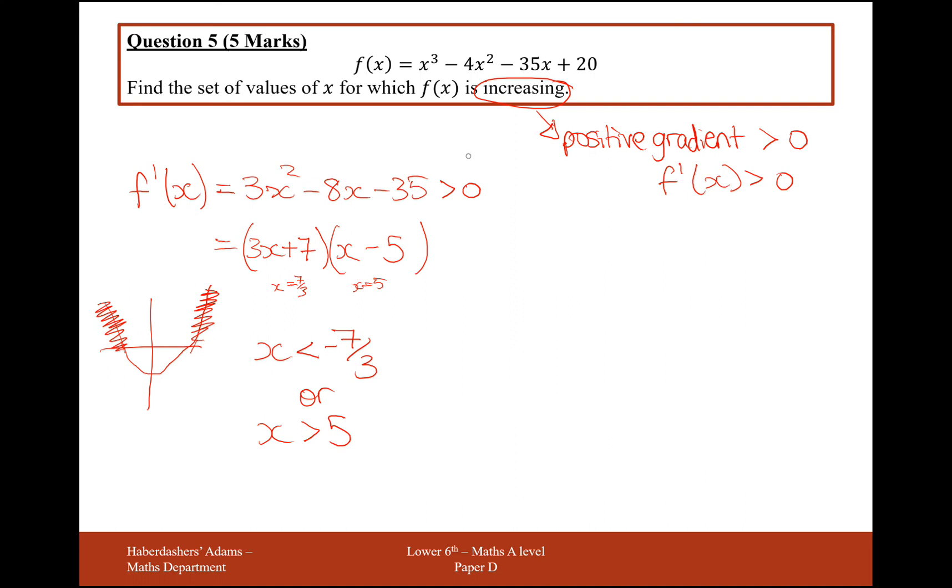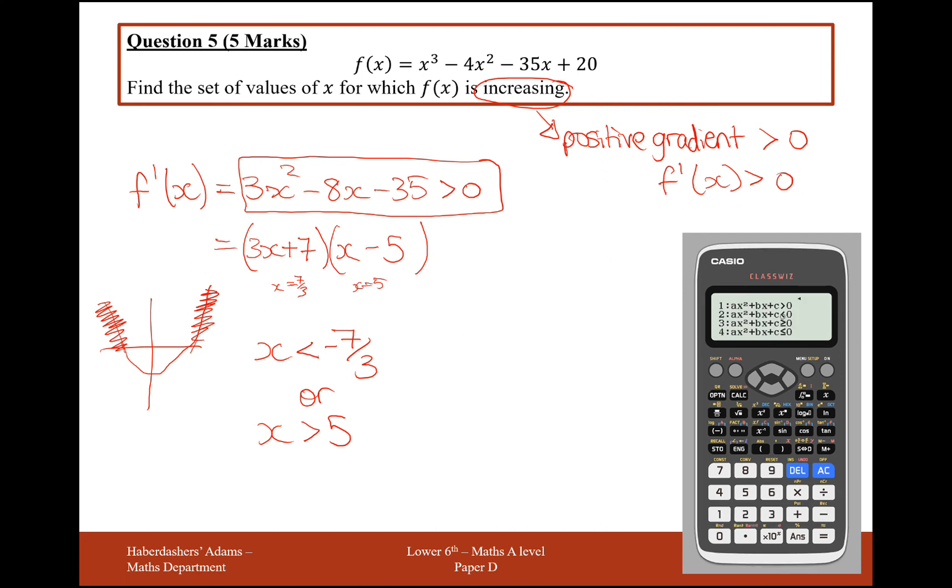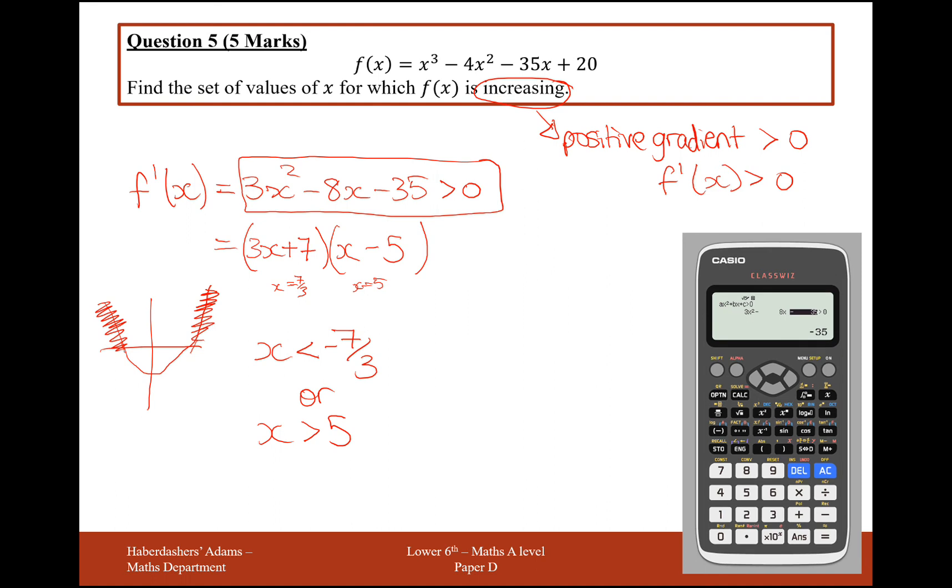And what we can actually do is we can check our answer to solving this part on our calculator. So you need to go to menu, down to option B right at the bottom, inequality. You want polynomial degree 2, and the exact polynomial we want here is option number 1, the strictly greater than polynomial. Press number 1. Type in your coefficients. If it's minus 8, type in minus 8.